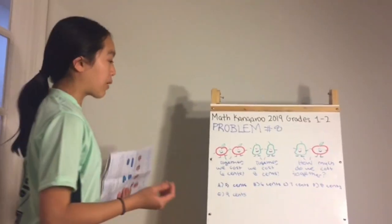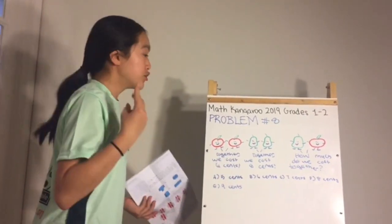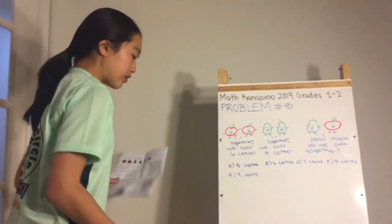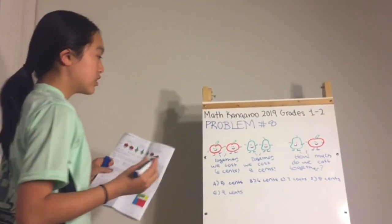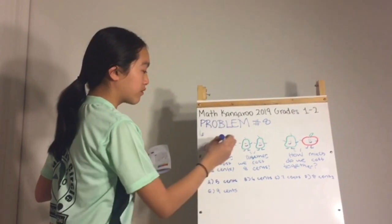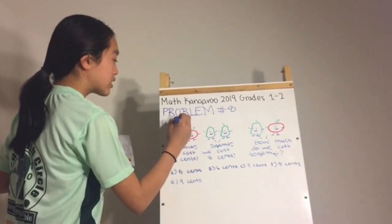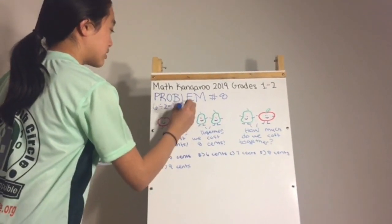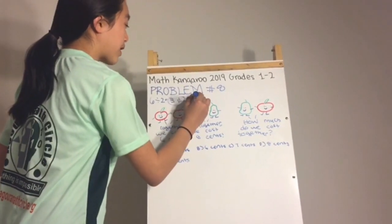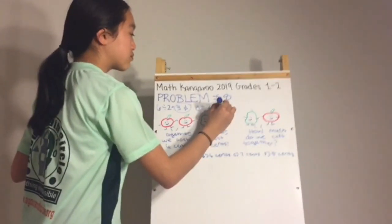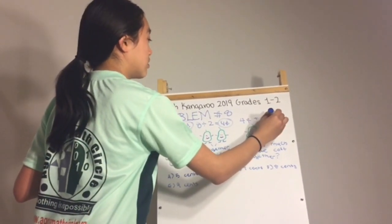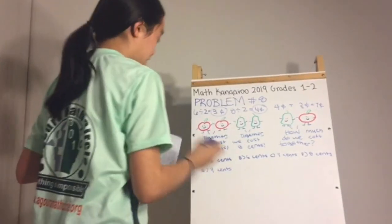Problem number eight: two apples together cost six cents, two pears together cost eight cents — how much does one apple and one pear cost together? Each apple costs 6 ÷ 2 = 3 cents, and each pear costs 8 ÷ 2 = 4 cents. So one apple plus one pear equals 7 cents. The answer is C.